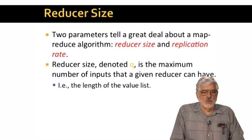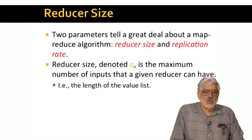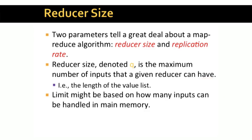The reducer size for an algorithm, which we'll denote by Q in what follows, is the maximum number of inputs that we allow for one reducer. Remember, a reducer is a key and its list of values, so we are really putting an upper limit on how long this list can be. One reason we might want to put such a limit on reducer size is so that we are able to execute the reduce function for one reducer in main memory, but there might be other reasons. For example, we might want to put a smaller limit on reducer size to force there to be lots of available parallelism.